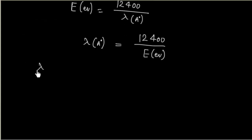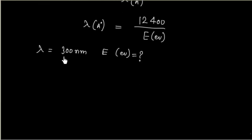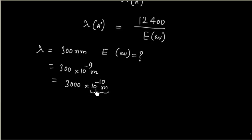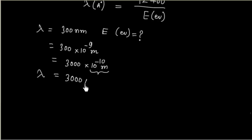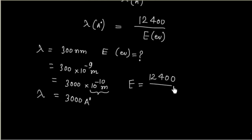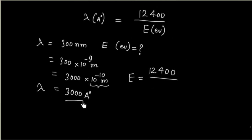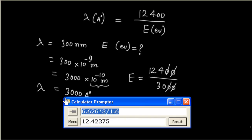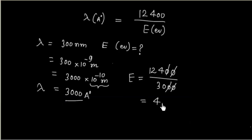Example 1: if λ = 300 nm, what is the energy in electron volts? First, convert to angstroms: 300 nm = 300 × 10⁻⁹ m = 3000 × 10⁻¹⁰ m = 3000 Å. Using E = 12400 / 3000, we get E = 124/30 = 4.13 eV.